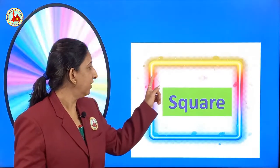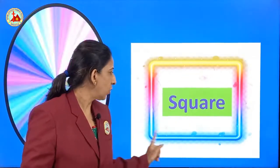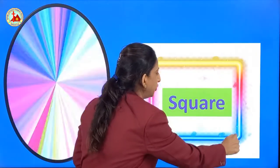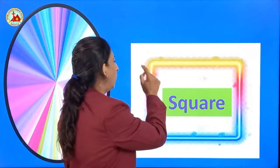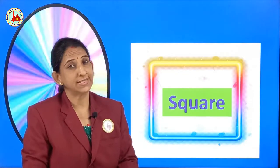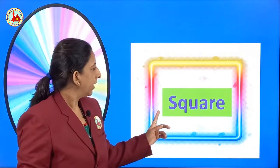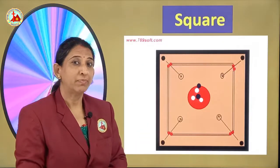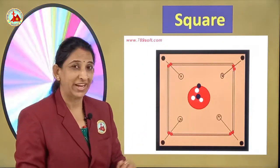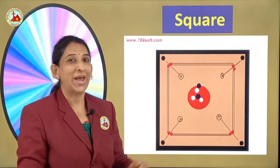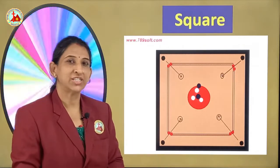This shape is square. Children, this is square. Square has 4 sides — 1, 2, 3, 4. Joining the 4 lines of the same size, we make a square. And where have you seen the square? Have you ever played carrom board? Which shape is this? This is a square shape.